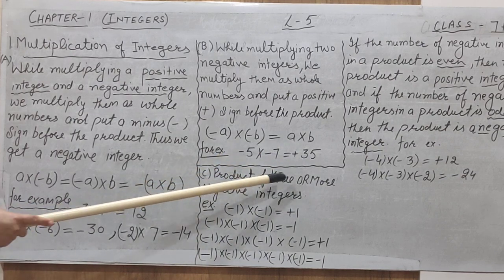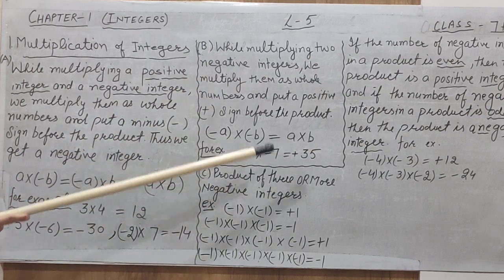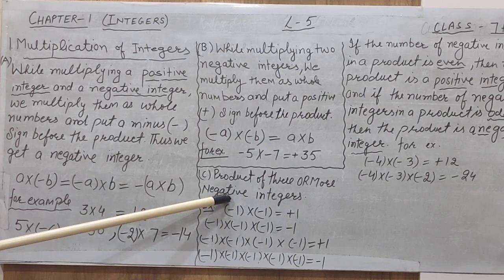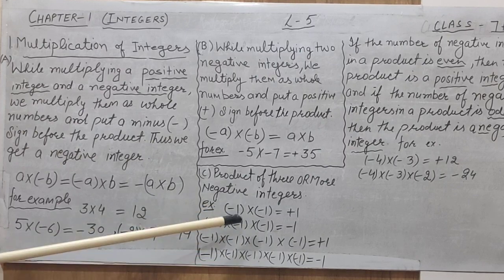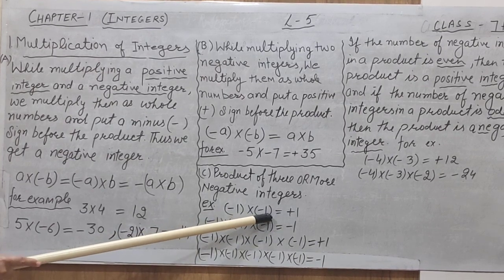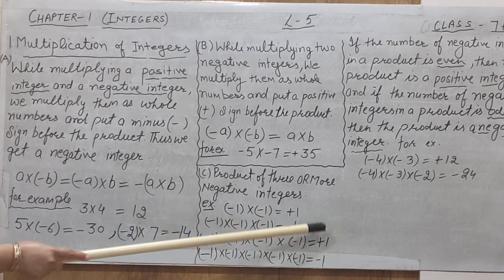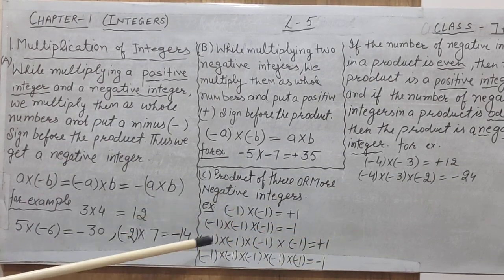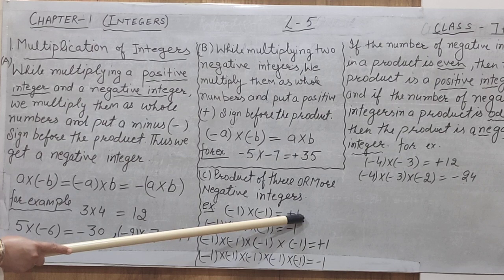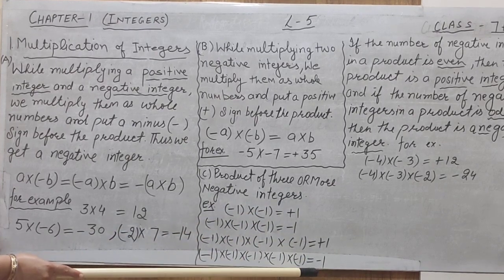Next, the product of three or more negative integers. In this case, we take only two integers at a time. I will use the example of minus 1 multiplied by minus 1, since both are negative and 1 multiplied by 1 always gives 1, so I want to concentrate on the sign. When two negative integers multiply, we get a positive sign.